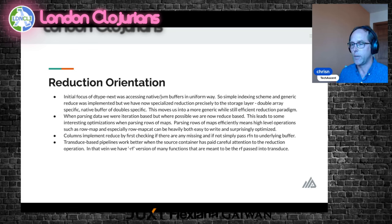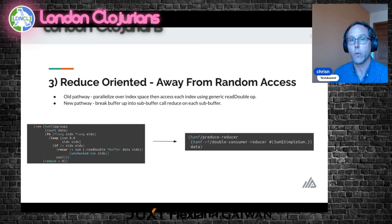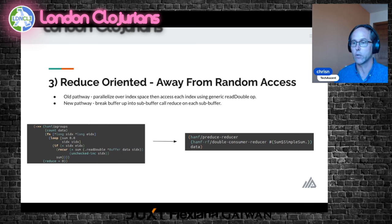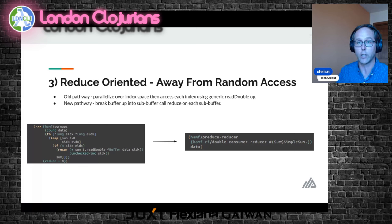Here's a concrete example of what I mean by reduce-oriented. The old pathway manually looped over things, created a sum, and returned it. The new pathway creates essentially a reducer — a parallelizable version of a reducing function. That's the difference in a nutshell of what it looks like in the code in many places now: whereas before you were iterating, now you're reducing.